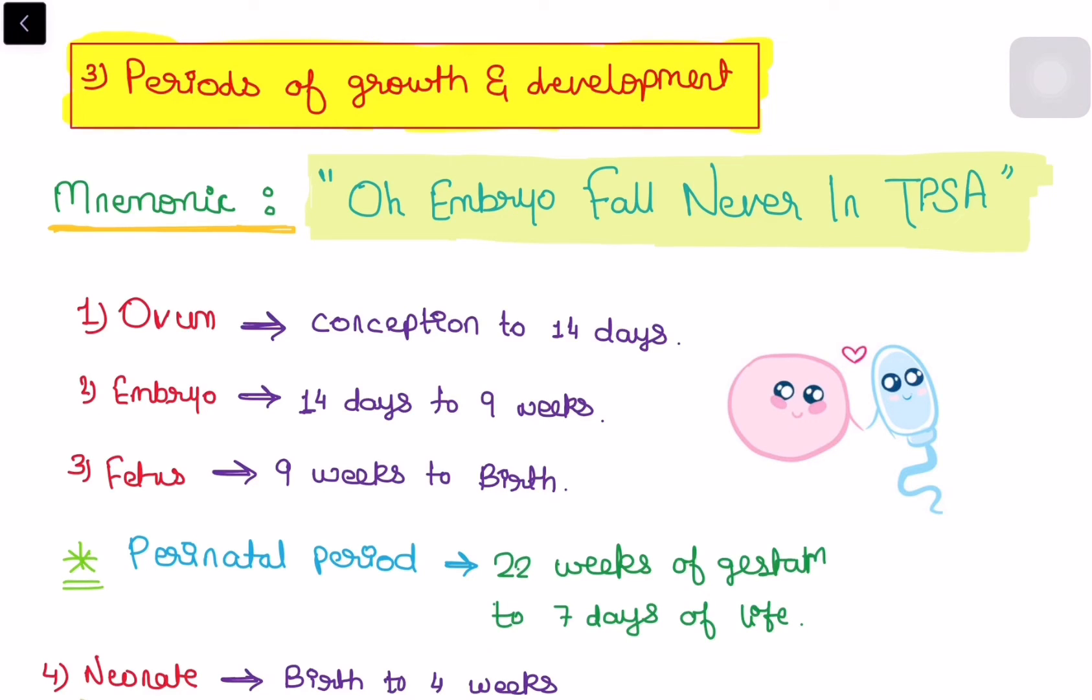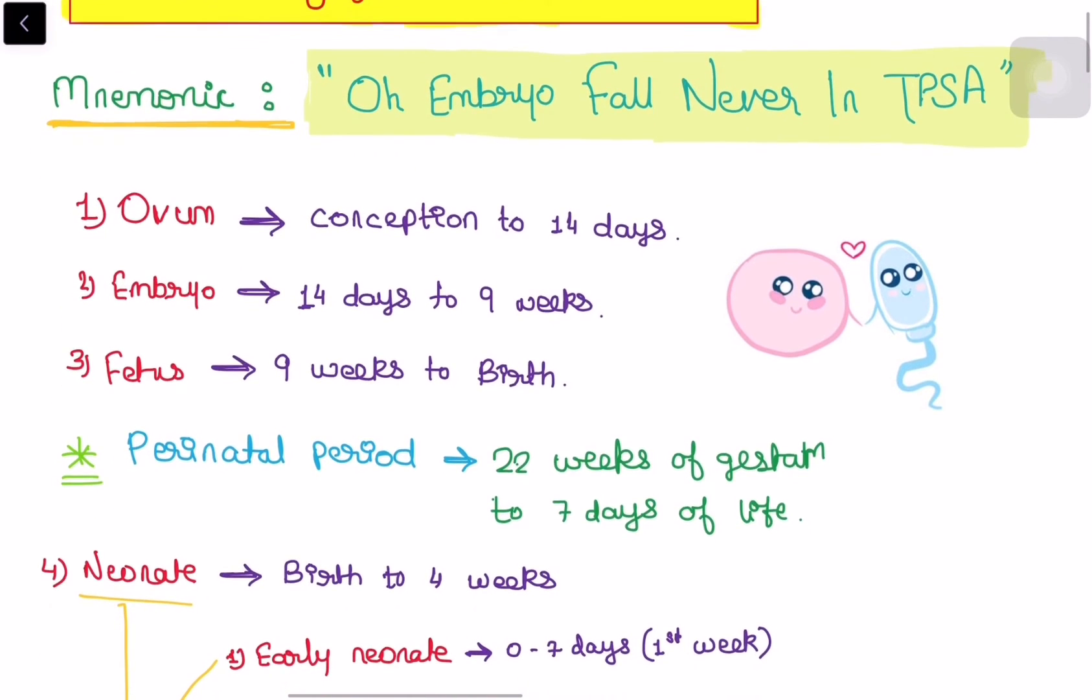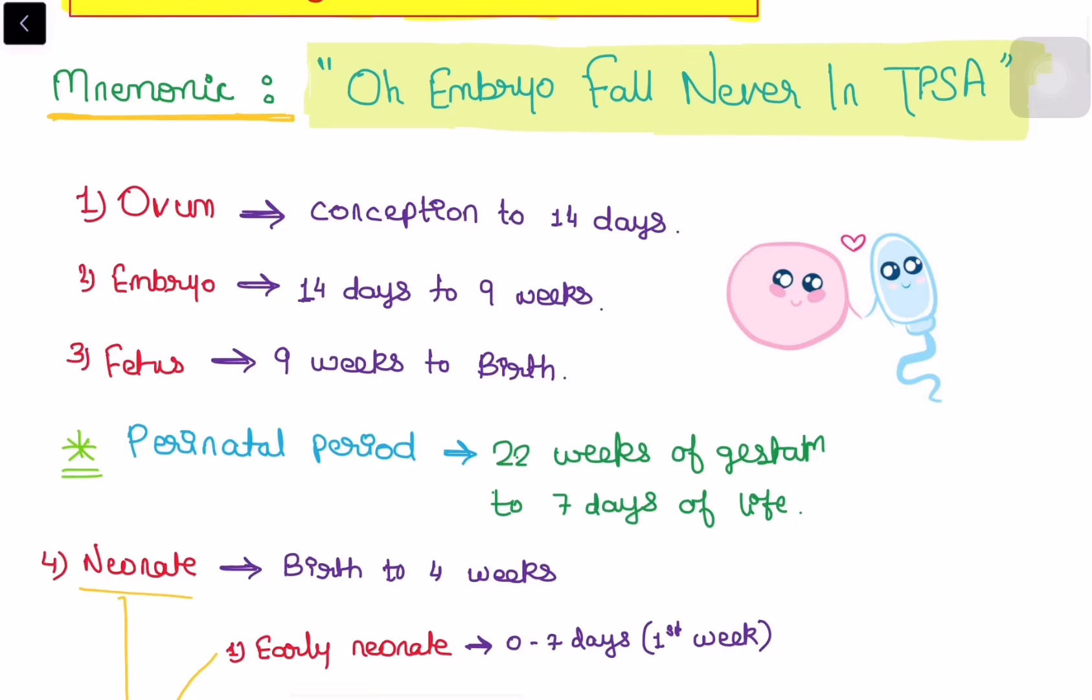The first one is ovum, ovum that is the conception to the 14 days, it is called ovum. Then the embryo, it is 14 days to 9 weeks, it is called as embryo. Fetus is from 9 weeks to the birth.